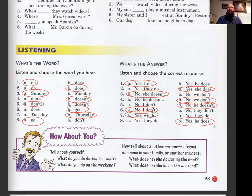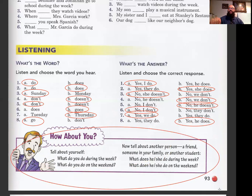Please write this down in your journal and notebook. Tell about yourself: What do you do during the week? What do you do on the weekend? Then tell about another person — a friend, someone in your family, or another student. What does he or she do during the week, and what does he or she do on the weekend?